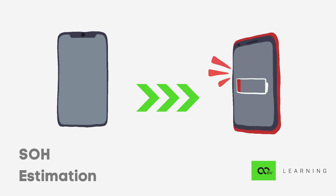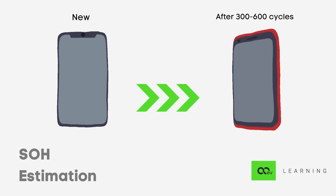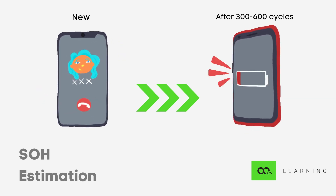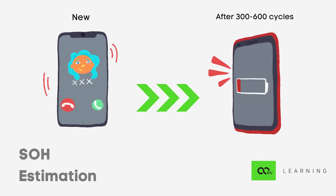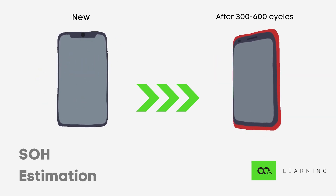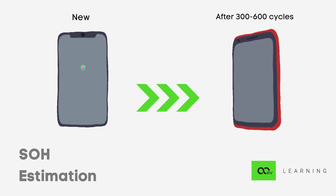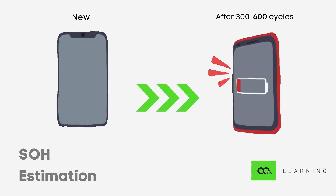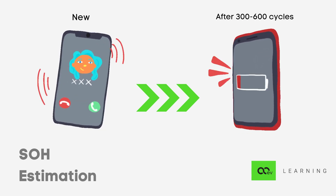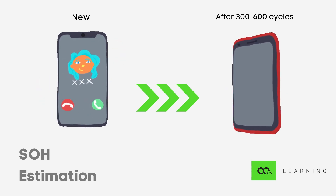But after say 300 or 600 discharge cycles — after about a year or two — you would see that perhaps it's gone down to 70, maybe even 60% SOH. This is very important to understand because it gives us the idea of how much energy you can discharge out of the battery pack over time.